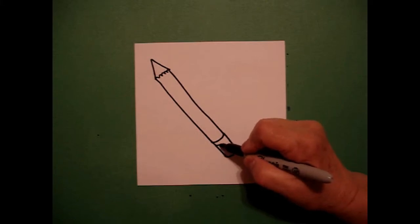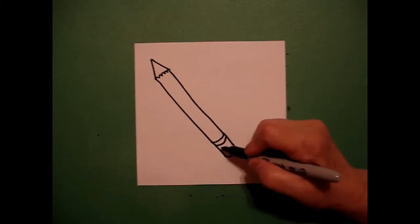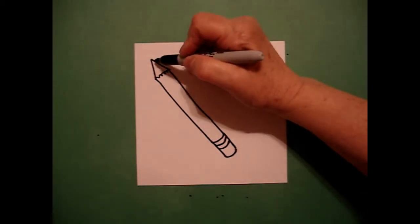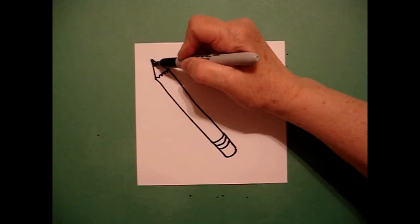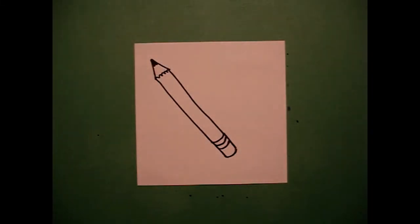I'm going to add one more curved line, one more curved line. I come back up to the top and I'm going to make the lead part of my pencil, coloring it in the tip just with my black marker and now I'm ready to color.